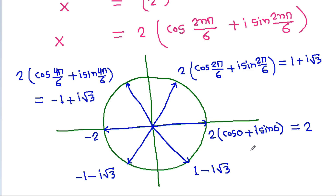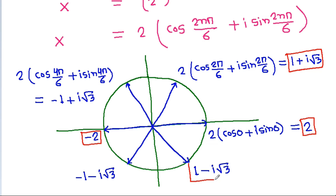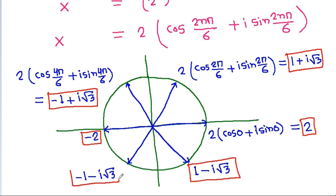So we get 6 solutions: 2, −2, 1 + i√3, 1 − i√3, −1 + i√3, and −1 − i√3.